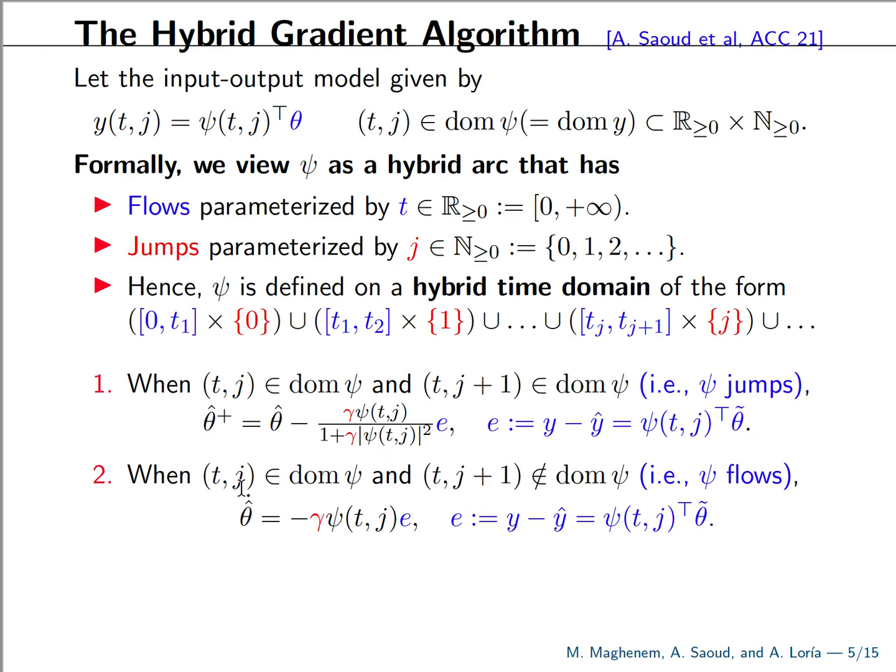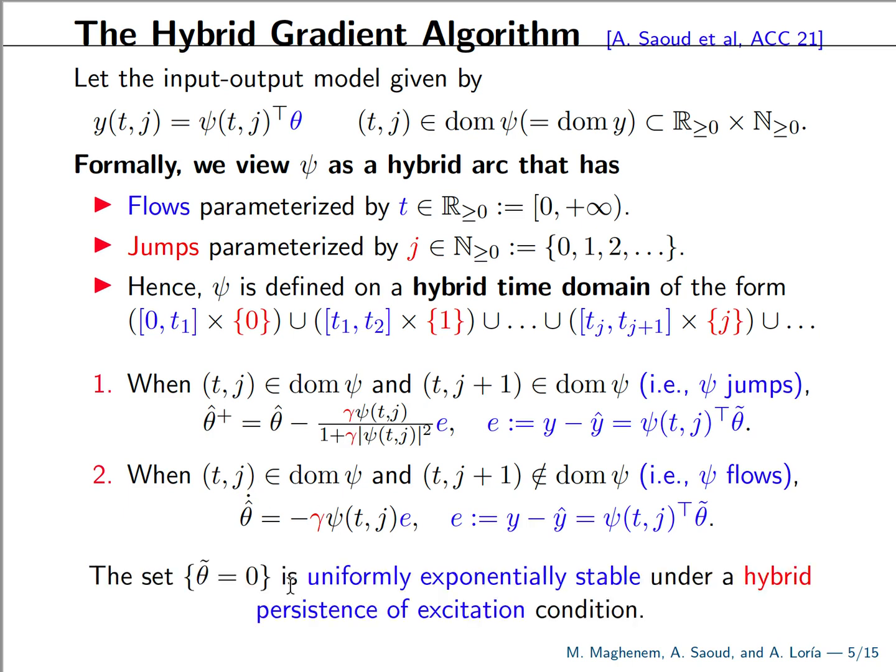And if our regressor flows, we update continuously. And we can show that the origin of the estimation error is uniformly exponentially stable, provided that a hybrid persistence of excitation condition holds. So pretty much a hybrid persistence of excitation condition is a sum of the continuous time and the discrete time excitation conditions at the appropriate time instances. We will write the expression in the coming slides.